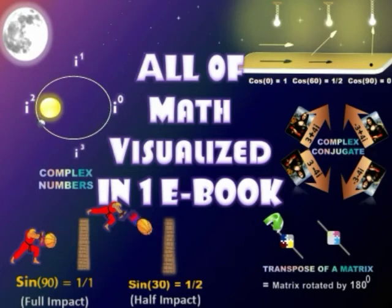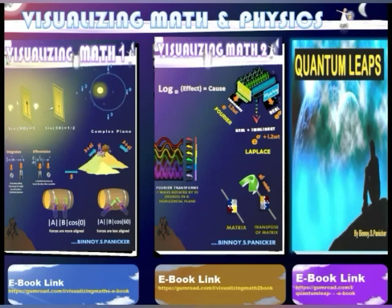What if the transpose of a matrix was nothing but the entire matrix rotated by 180 degrees about the diagonal as the axis of rotation? What if cos theta was a measure of nothing but how parallel two forces were or influences were? And so at zero degrees the impact is maximum and at 90 degrees minimum.